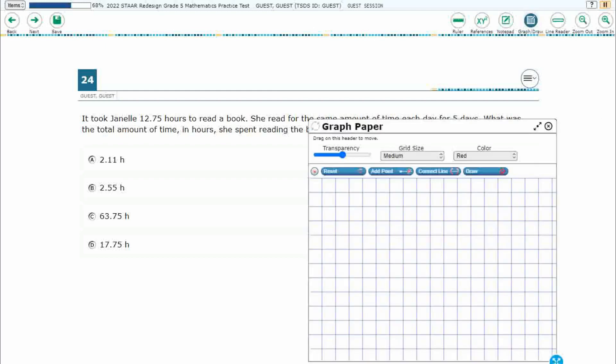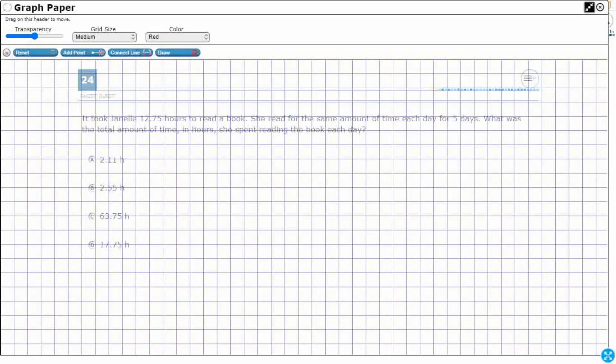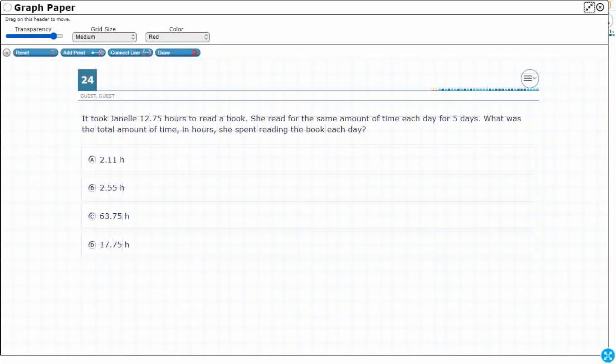Alright, so let's get our graph draw feature out here and we need to make a strip diagram here. The key is going to be what do we do with our 5 and our 12.75. Do we multiply them, do we divide them, add them, subtract them? What options do we have here?